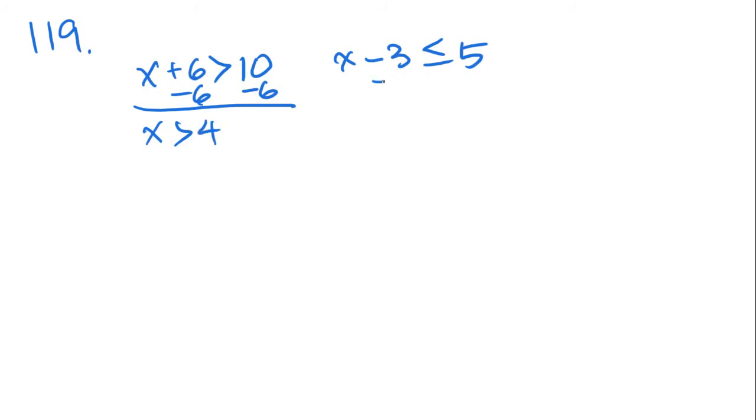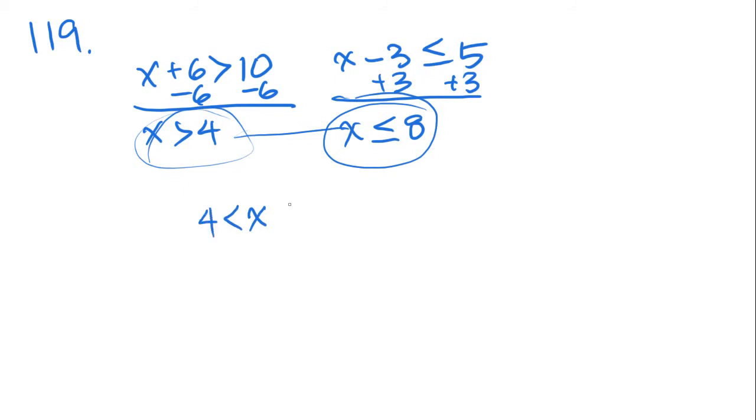Now on this side, let's add a 3 on both sides. We get x is less than or equal to 8. Then let's combine these two equations to get x is larger than 4 and less than or equal to 8. Is that one of the answer choices? Yes, it looks like that is answer choice D.